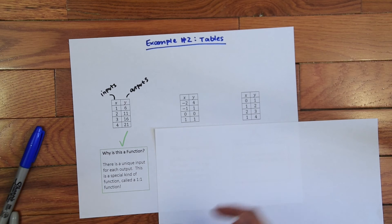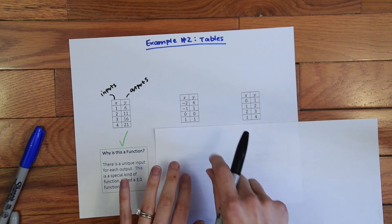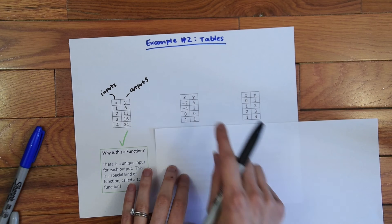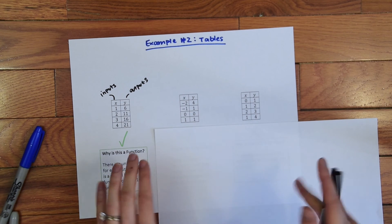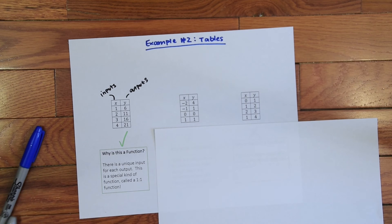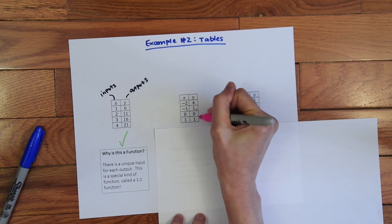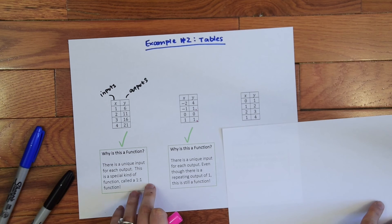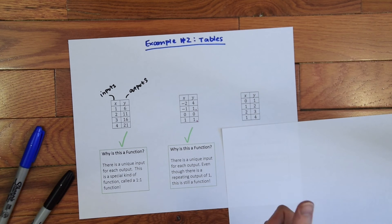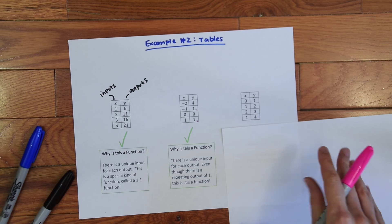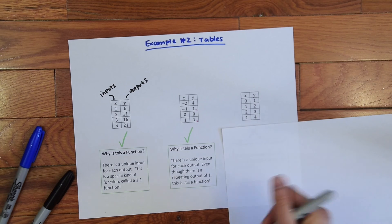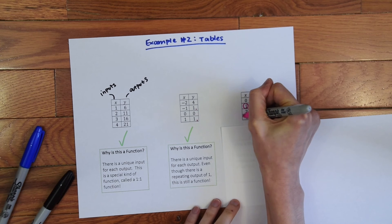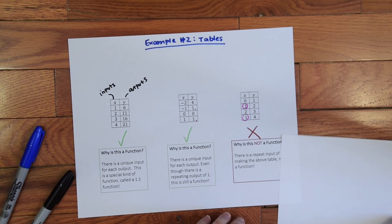Same thing over here, let's look for any repeating inputs on the left side here. No, so we know we are in the clear and this is also a function. Notice we have the repeating ones on the right but that's okay, right, it's okay to have repeating outputs. And the last example here we're looking for any repeating inputs and notice we have these two ones which we cannot have, so we know that this is not a function.